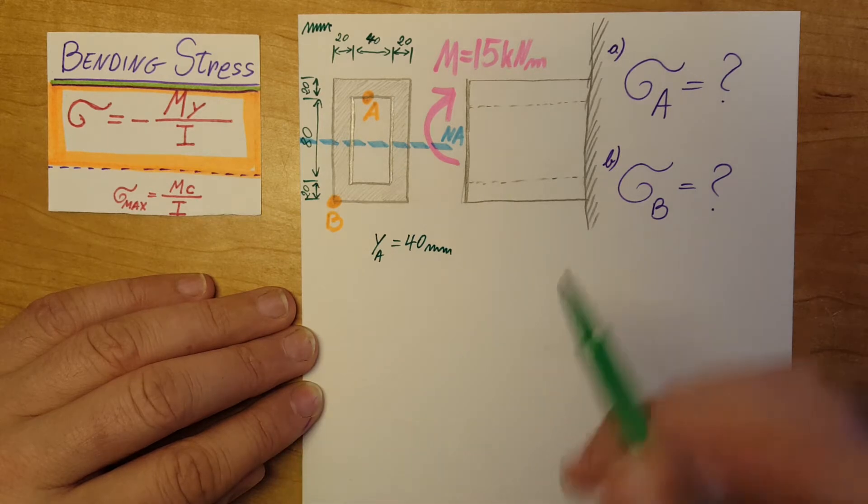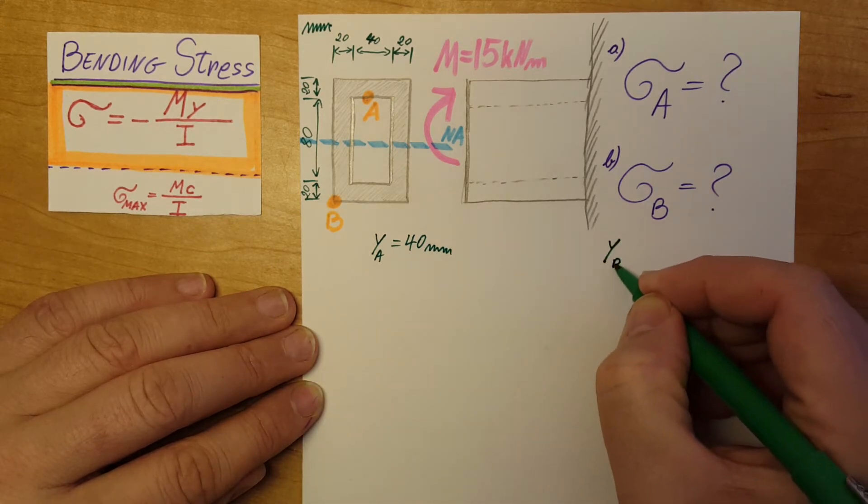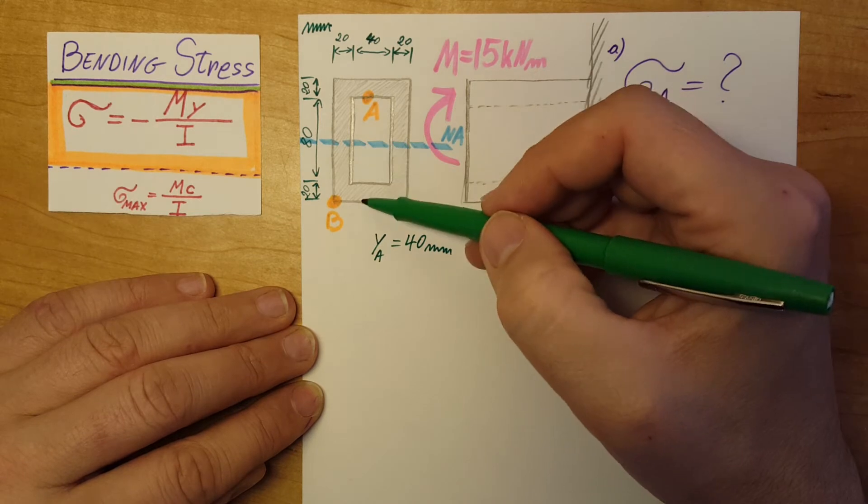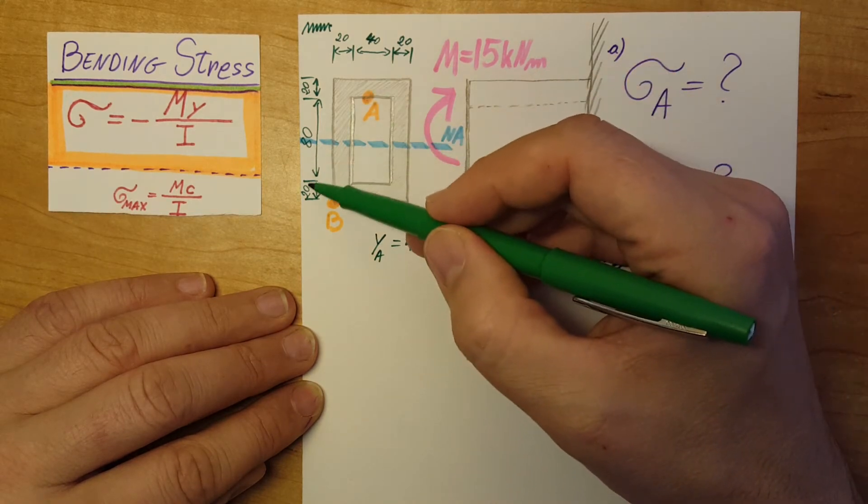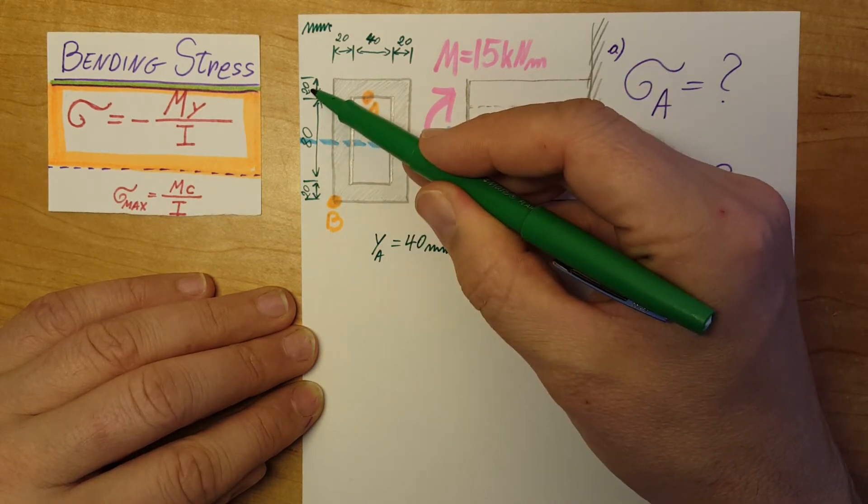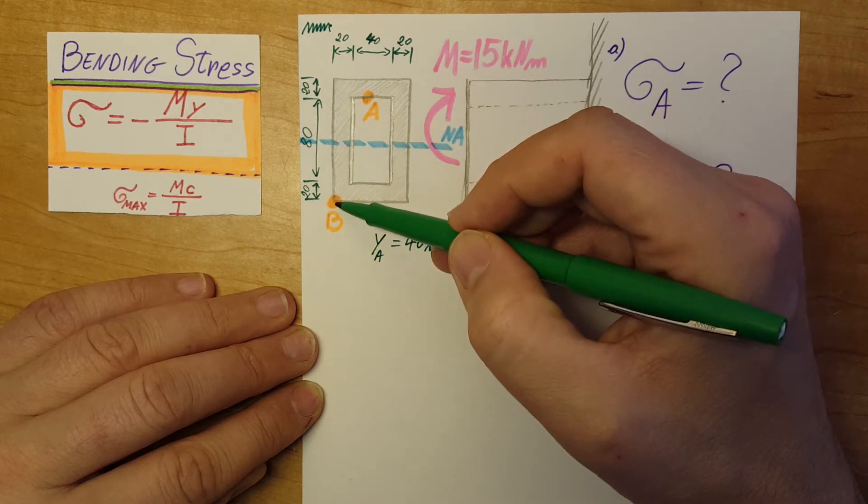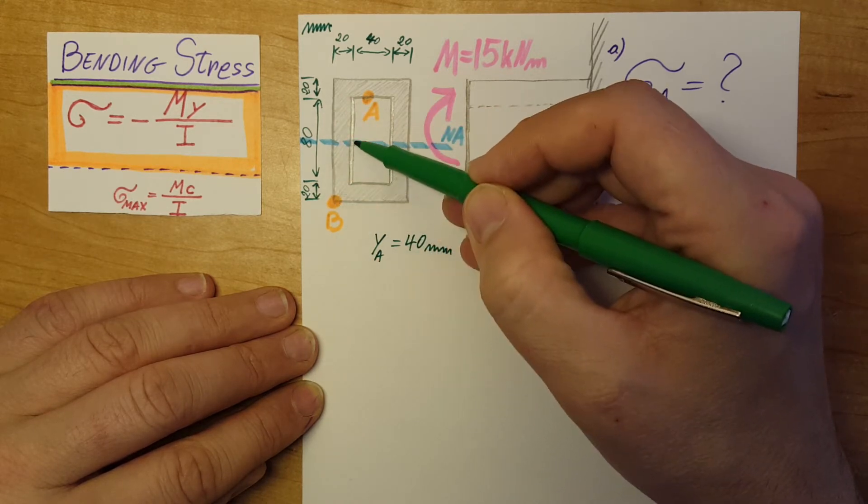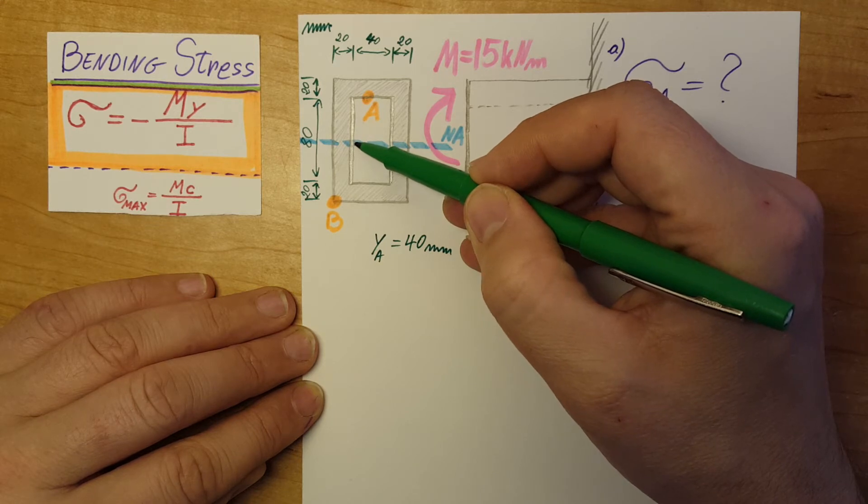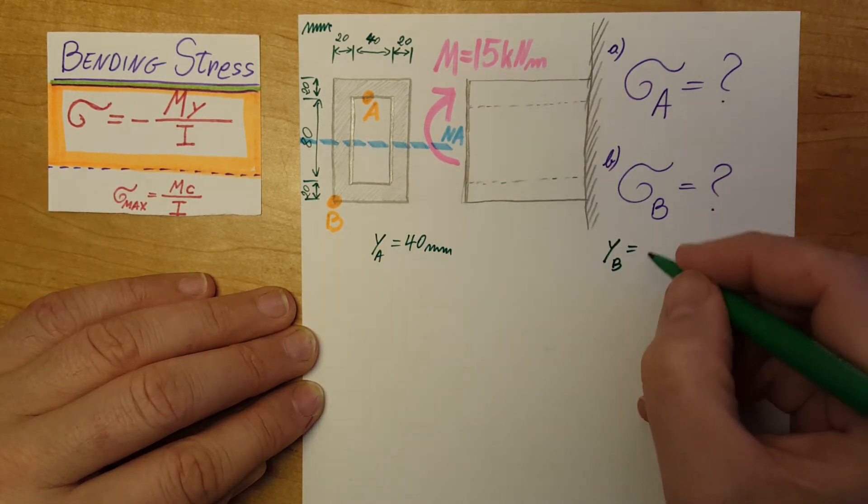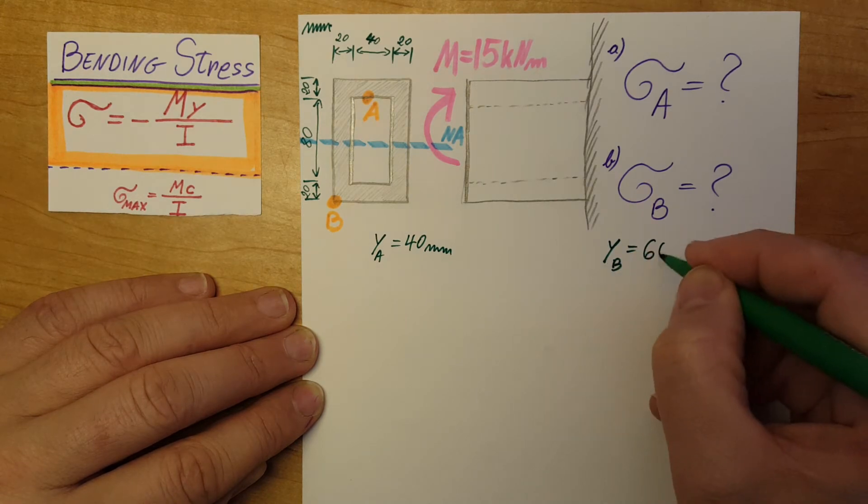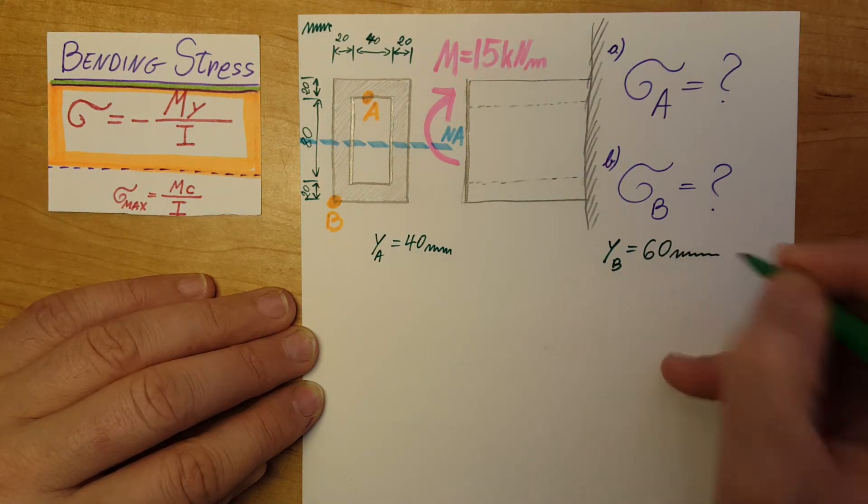Now Y for B. We know that the whole thing is 80 plus 20 plus another 20, so that's 120. So it's all the way at the edge. So half from the neutral axis to here will be 60. Therefore, Y for B will be 60 millimeters.